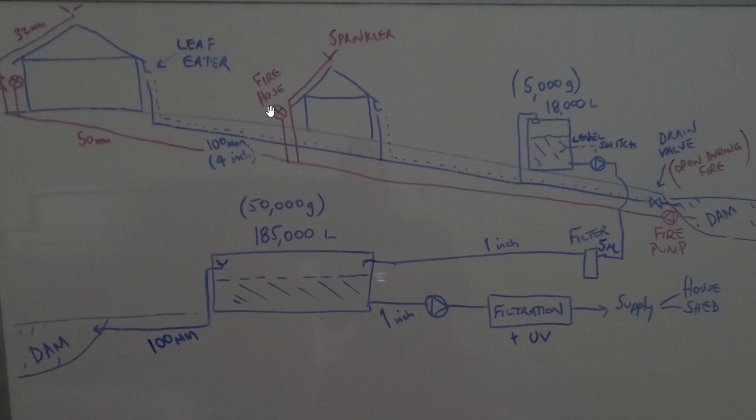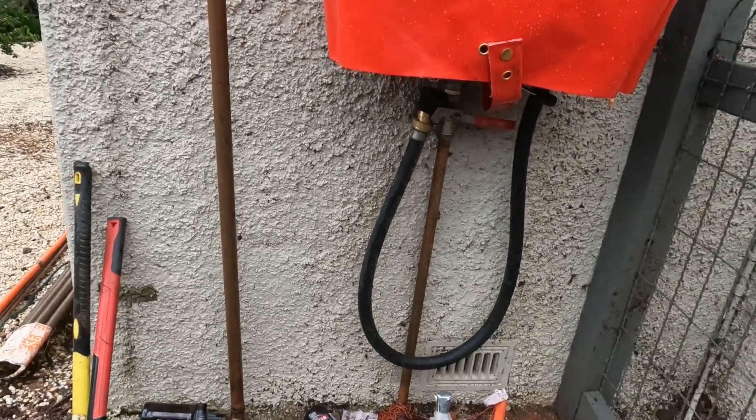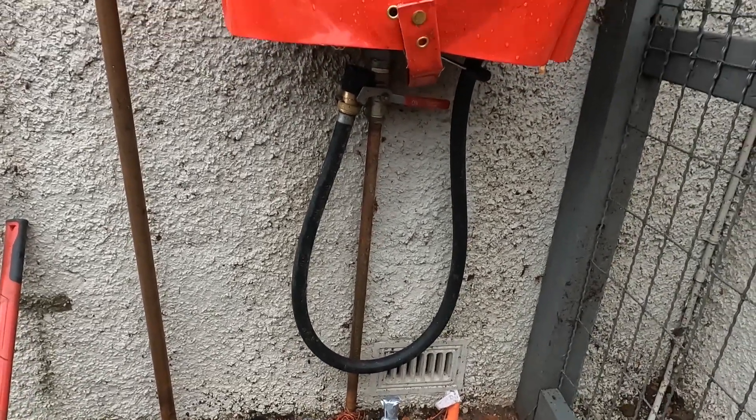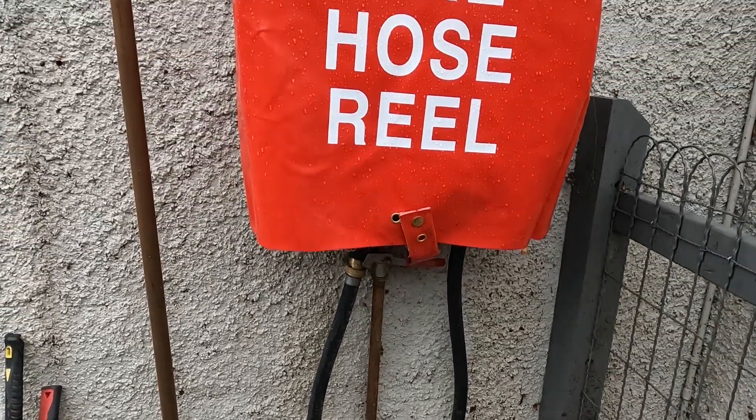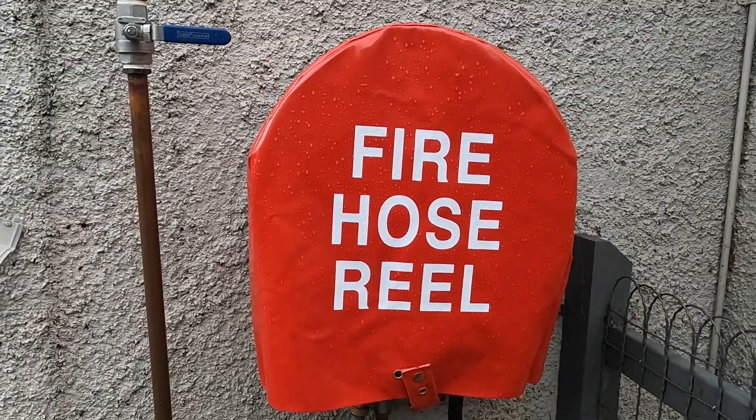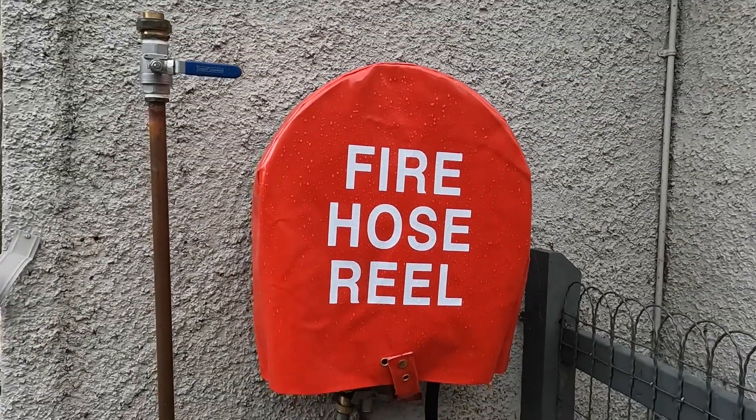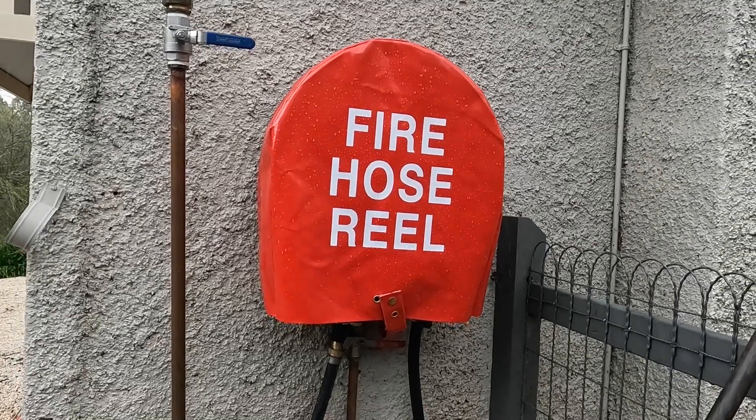Now this purple line is from a fire pump that I plan to put down at the dam. I've already put the purple line in which is a 50 millimeter transfer line and I've got fire hoses and a separate manual valve which I still need to complete, but that'll be for sprinklers on the roof.